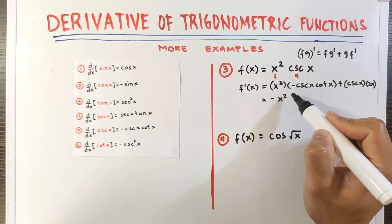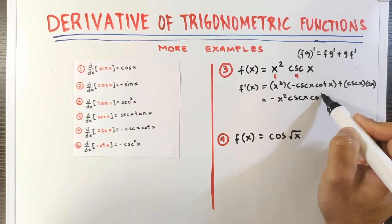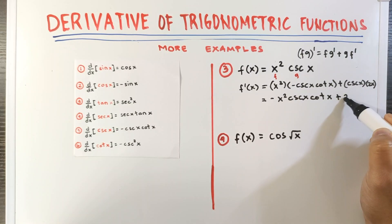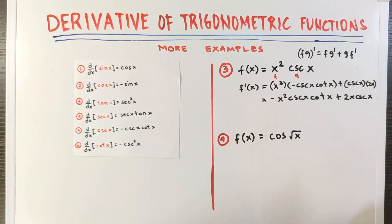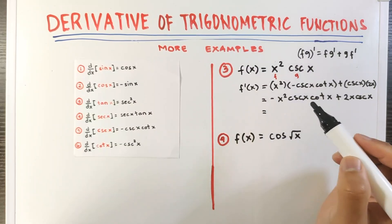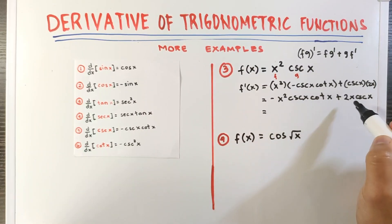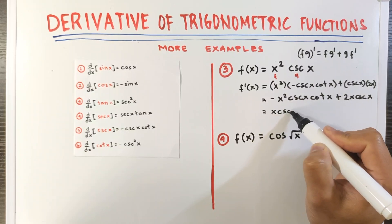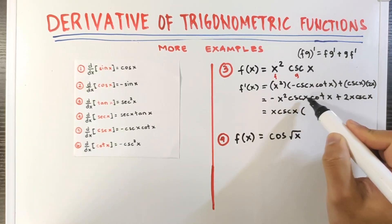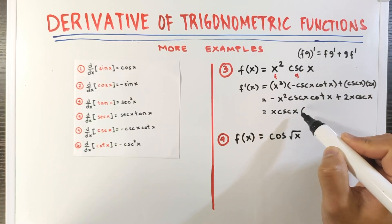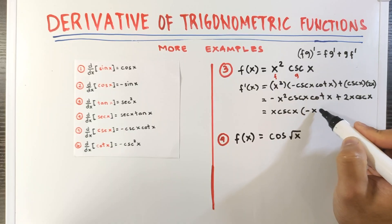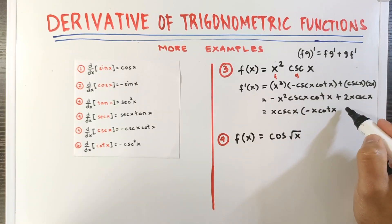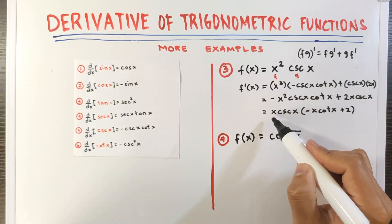So we have negative x squared cosecant x cotangent x, plus 2x cosecant x. We can write the final answer in factored form by factoring out x cosecant x as the GCF. Dividing both terms by x cosecant x gives us negative x cotangent x plus 2. So the final answer is x cosecant x times the quantity negative x cotangent x plus 2.